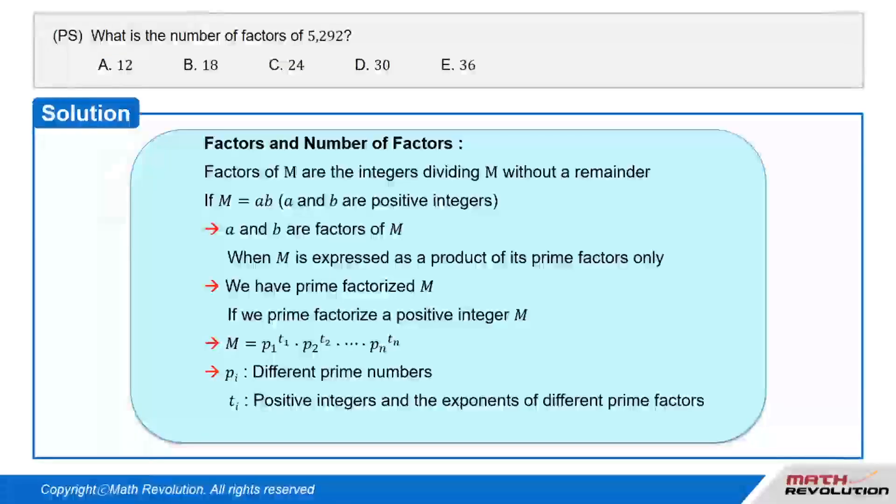If we prime-factorize a positive integer m as m equals p1 to the power of t1 times p2 to the power of t2 times and so on until we get pn to the power of tn, where pi stands for different prime numbers and ti are positive integers and stands for the exponents of the different prime factors.